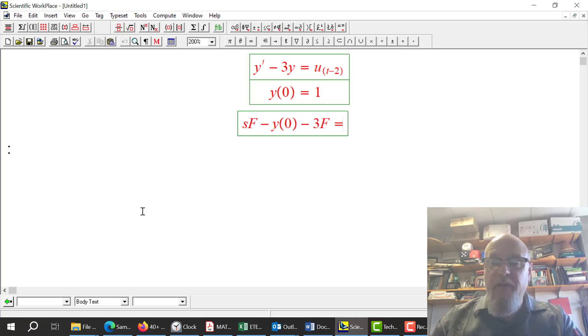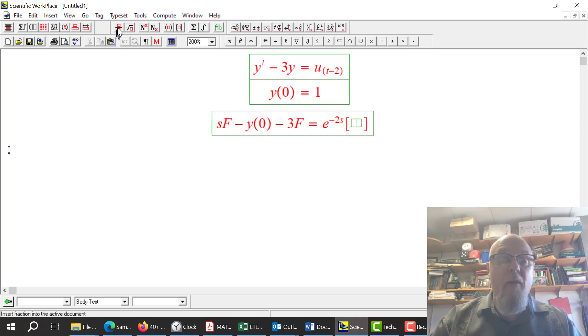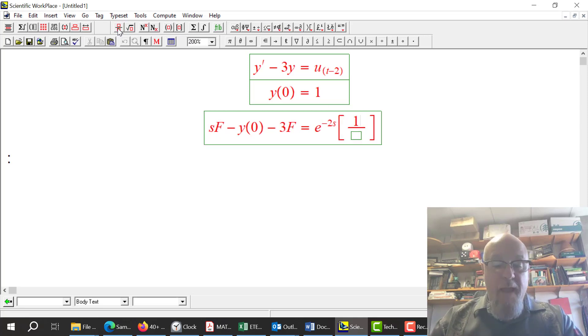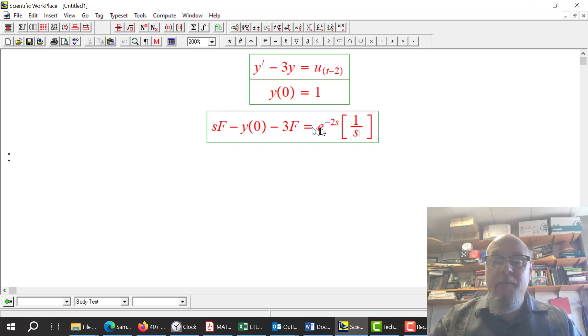The transform of the Heaviside step function from the chart is, well, the chart would write it as e to the minus 2s, and they would just go over s. I'm going to write it as, instead of over s, I'm going to put square bracket 1 over s so that I have the Laplace equivalent of the Heaviside step function times the transform of the function it turns on.